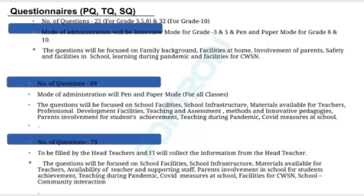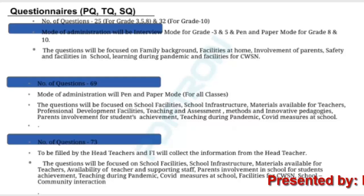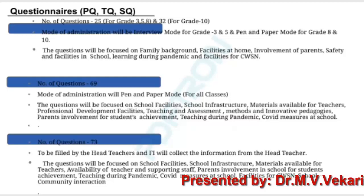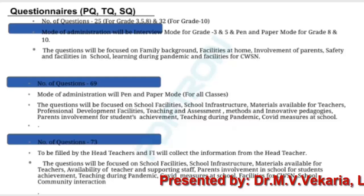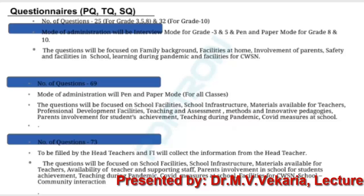Questionnaires: Number of questions is 25 for grades 3, 5, and 8, and 32 for grade 10. Mode of administration will be interview mode for grades 3 and 5, and pen-and-paper mode for grades 8 and 10. The questions will be focused on family background, facilities at home, involvement of parents, safety and facilities in school, learning during the pandemic, and facilities for children with special needs (CWSN).